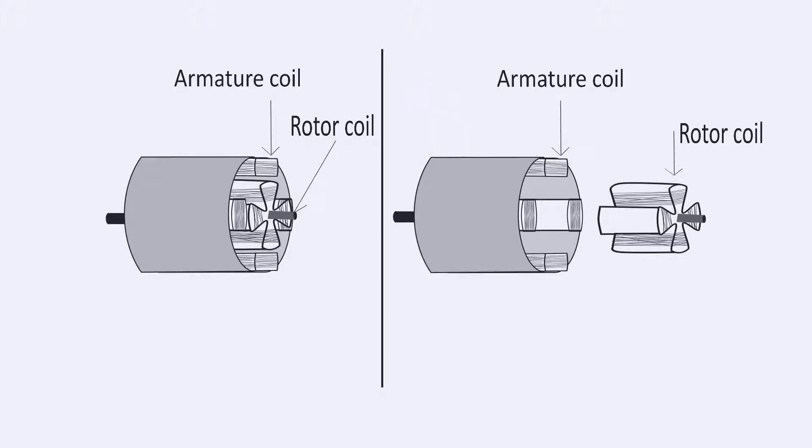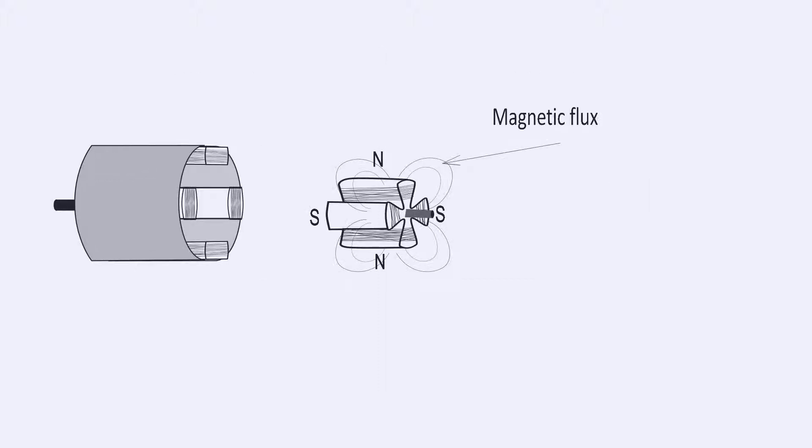Rotor and armature coils are the two main parts of an alternator. The rotor produces a rotating magnetic flux. Armature coils are stationary, and the rotating magnetic flux associated with the rotor induces electricity in the armature coils.